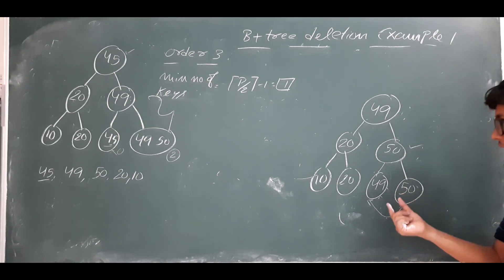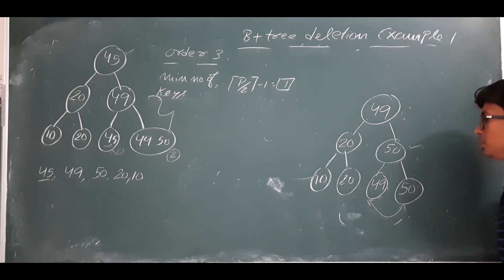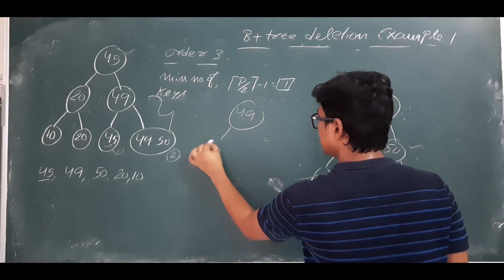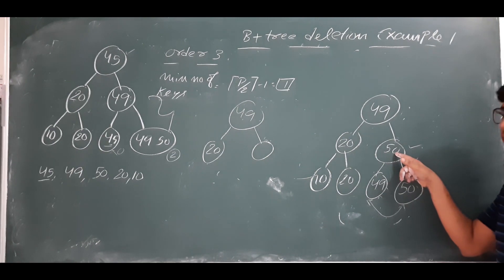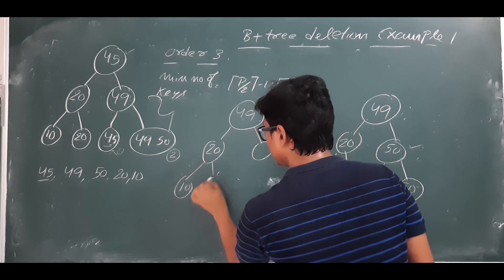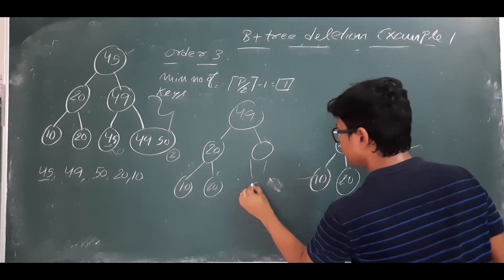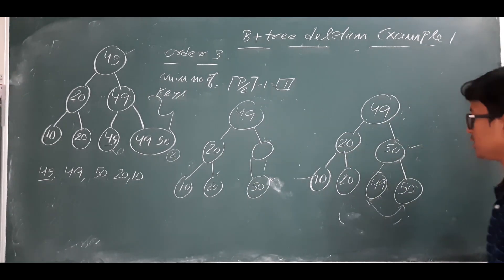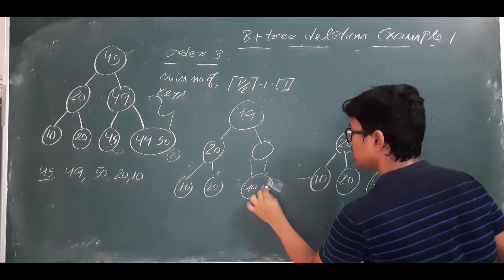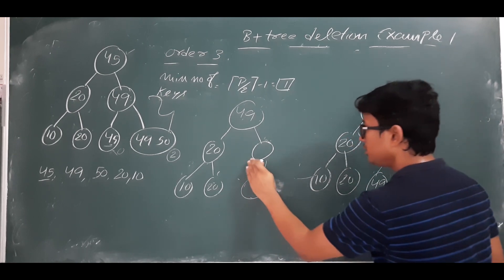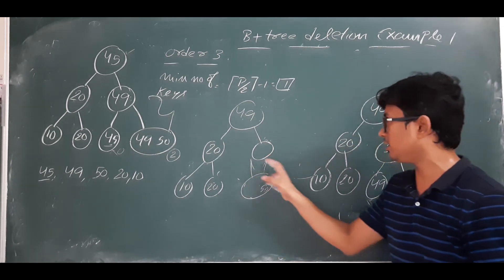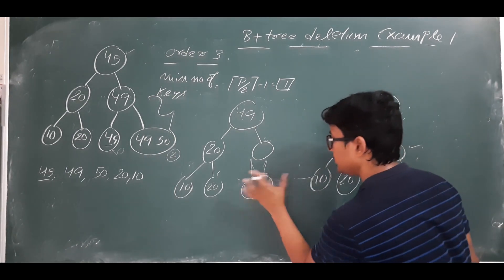After merging, the parent node has its entry deleted and becomes empty. The merged leaf node contains 49 and 50. Since we are deleting 49, the merged leaf will retain 50. The parent node is now empty, and 50 is positioned as its child. We need to determine which side 50 falls on relative to the remaining structure.